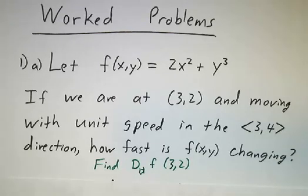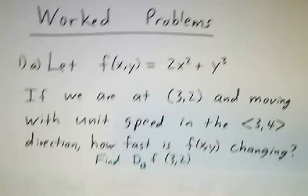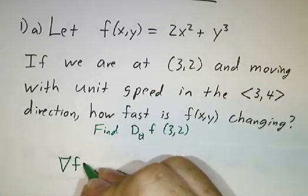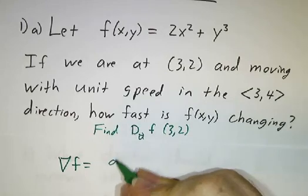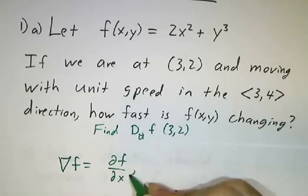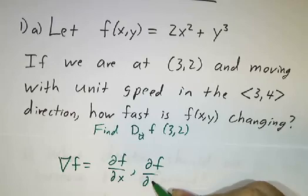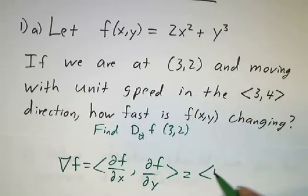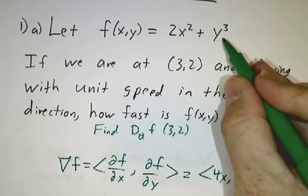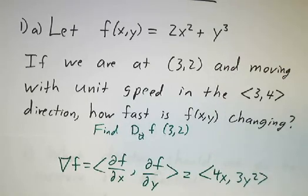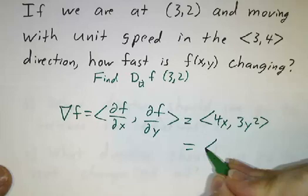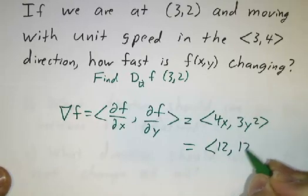The first thing we need to do is figure out what the gradient of f is. The gradient of f requires taking the partial with respect to x and the partial with respect to y. The partial with respect to x is 4x, and the partial with respect to y is 3y². Evaluating at (3, 2), we get (12, 12).